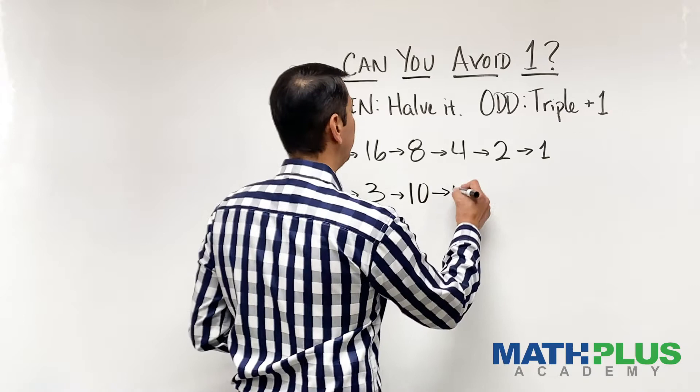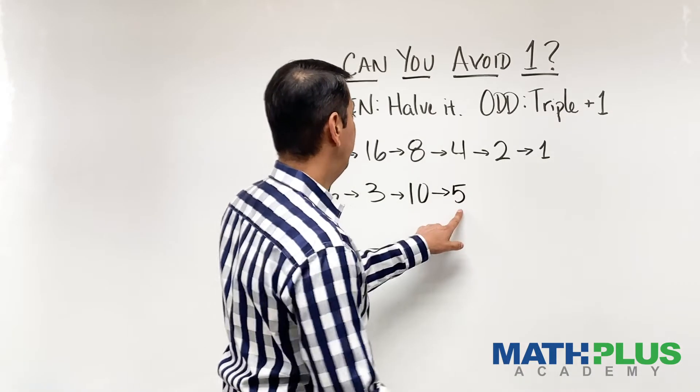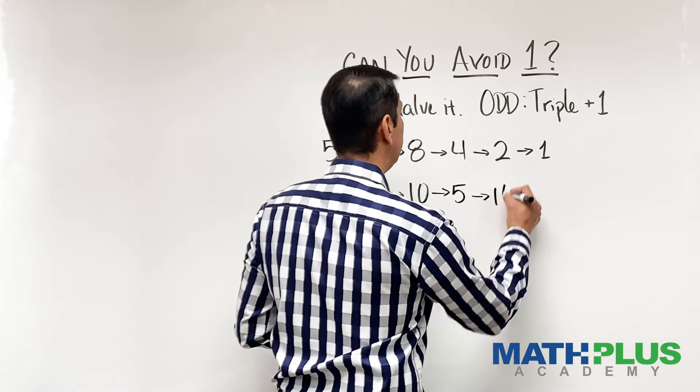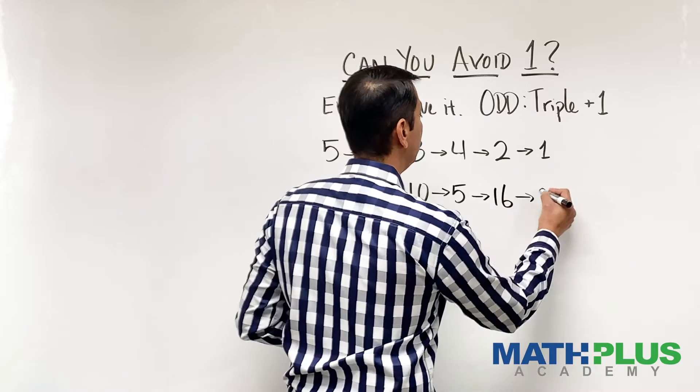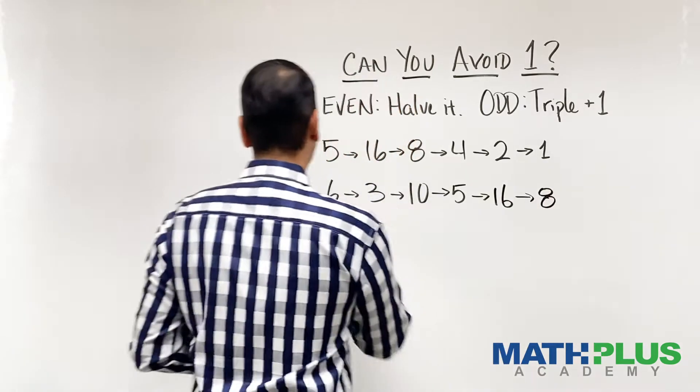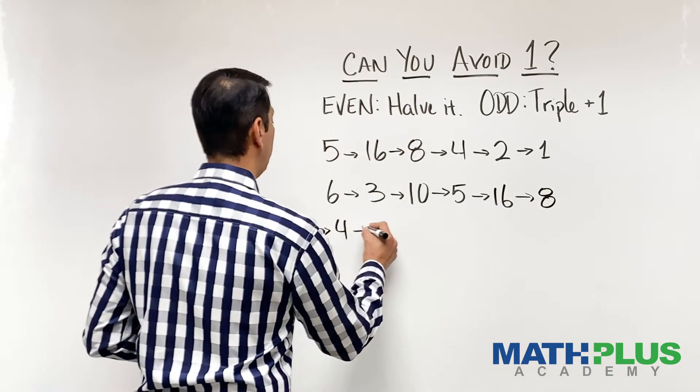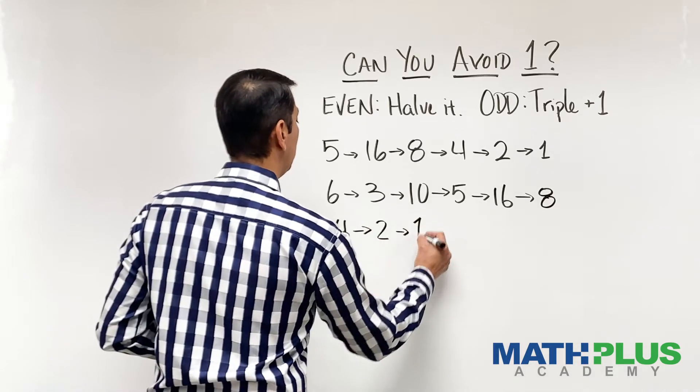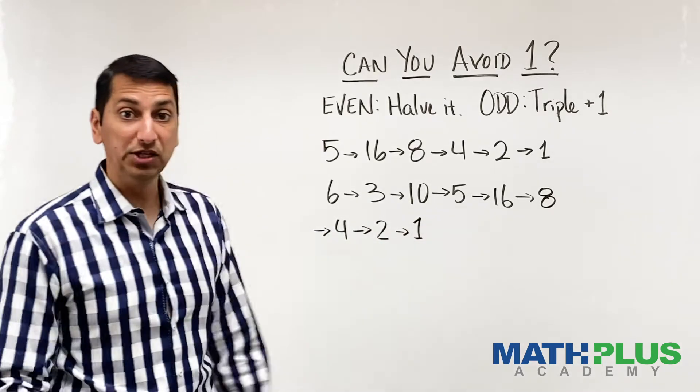Ten's even. That brings me to five. Five is odd. Up to 16. 16's even. I'm at eight. Eight's even. Four, two, one. Back into that four, two, one loop again.